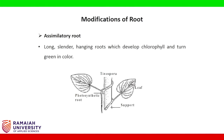Assimilatory roots: they are long, slender, hanging roots which develop chlorophyll and turn green in color. Example: Tinospora.